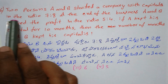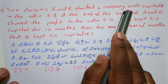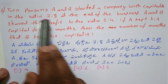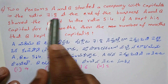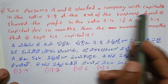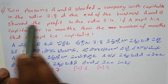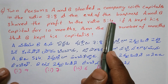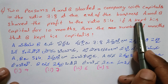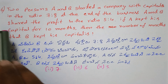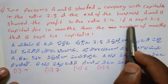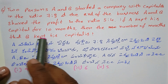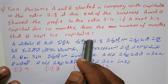Two persons A and B started a company with capital in the ratio of 7 is to 8. At the end of the business, A and B shared the profit in the ratio of 5 is to 4. If A kept his capital for 10 months, then find the number of months that B kept in the capital.